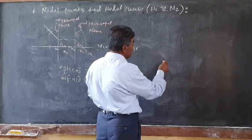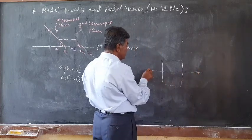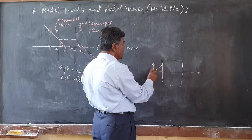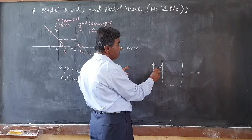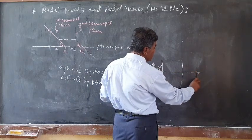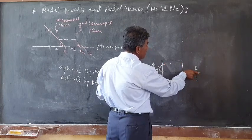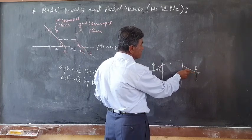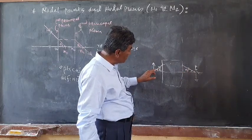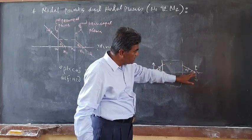Before going to that, remember that if this is the optical system and this is the principal axis, if the object is placed here and a ray of light from this point on the axis makes an angle theta with the axis, and we are getting the image somewhere, then after refraction it meets the ray making angle theta two. So we consider two rays — one making angle theta one with the axis and after refraction it makes angle theta two with the axis to get the image.